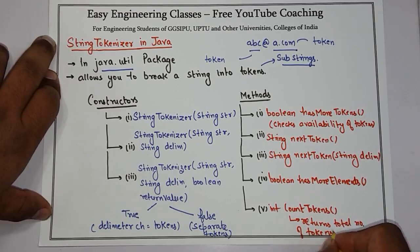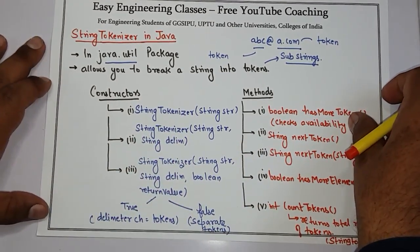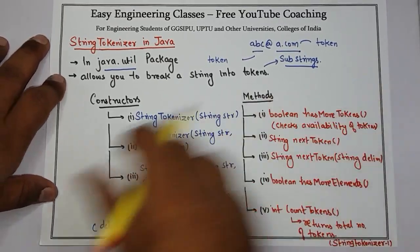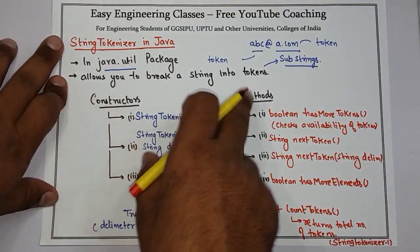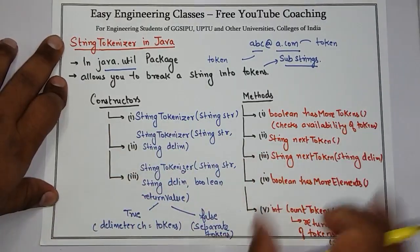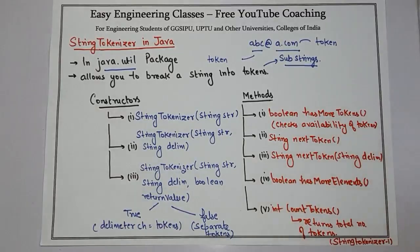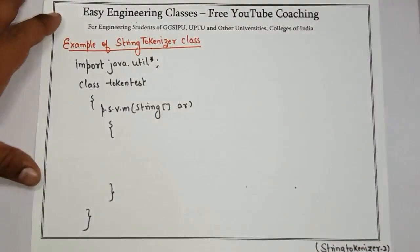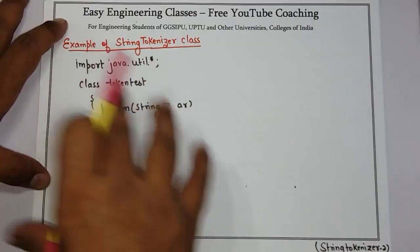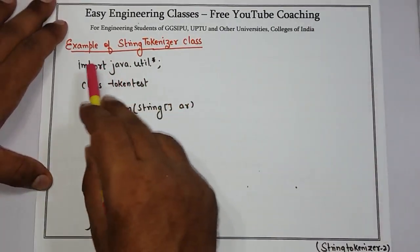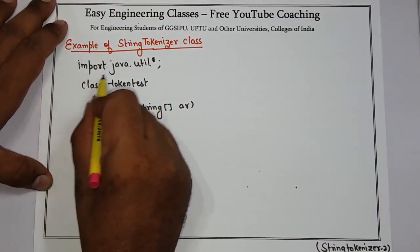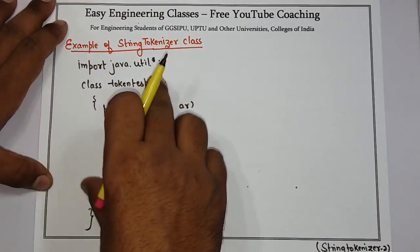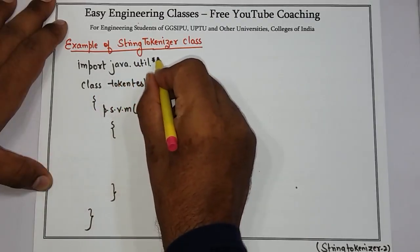This is the theory of StringTokenizer class. If there is ever a question about StringTokenizer class, you can explain that it is present in the util package, used to break a string into tokens, with three different types of constructors and the methods discussed. Now we will see one simple example of StringTokenizer class and how it works. I have already written the structure of my class which is used to demonstrate the example for StringTokenizer.